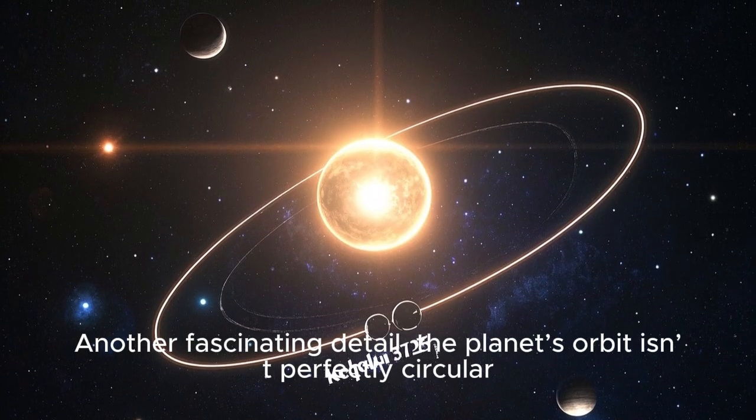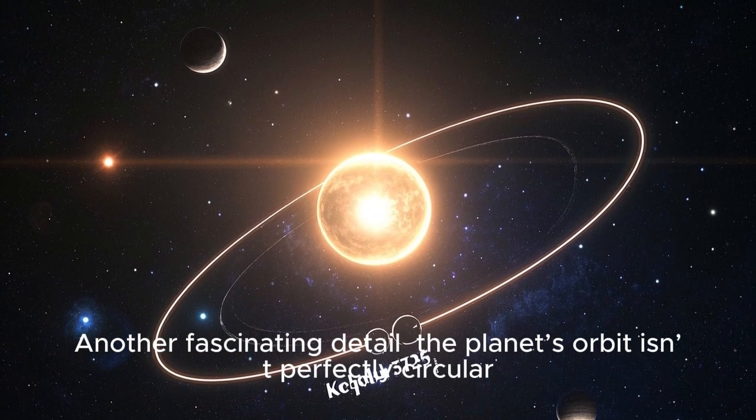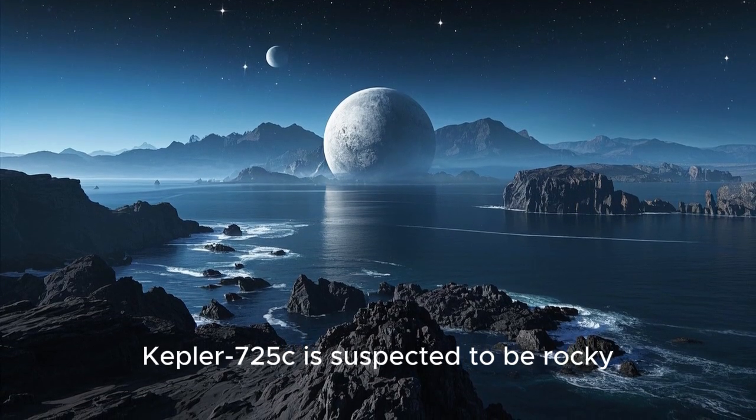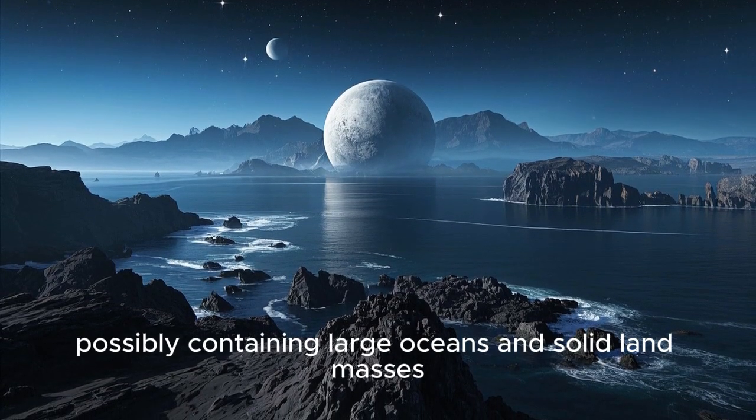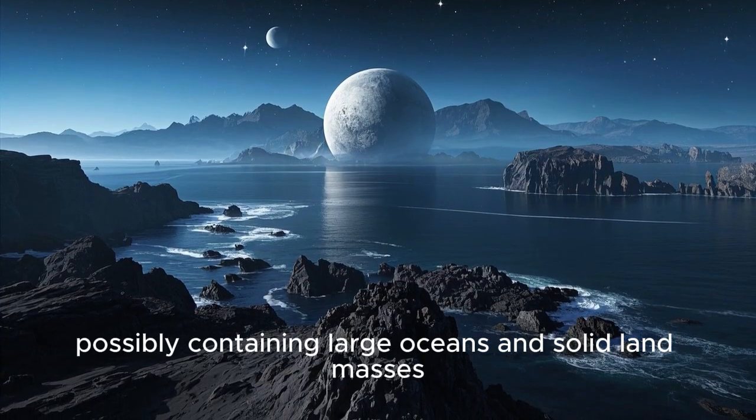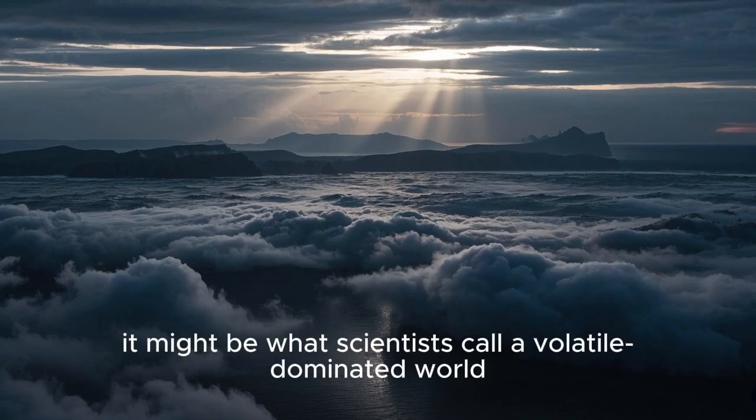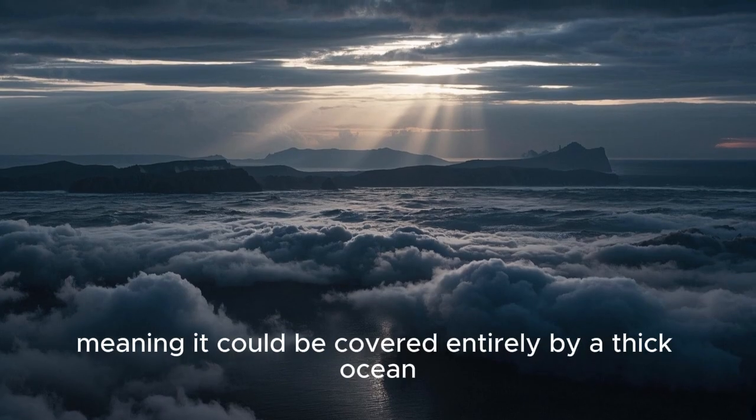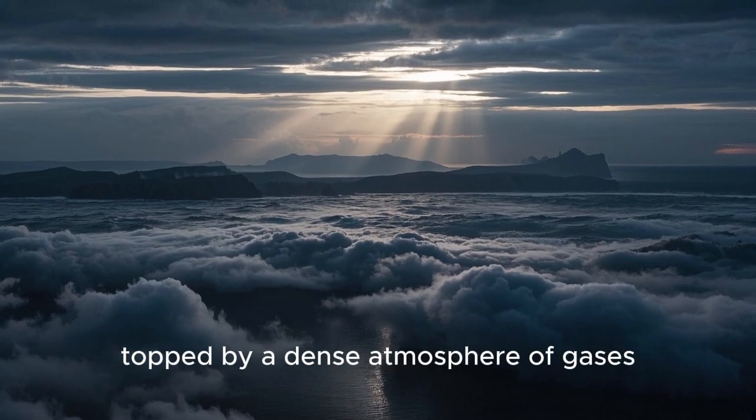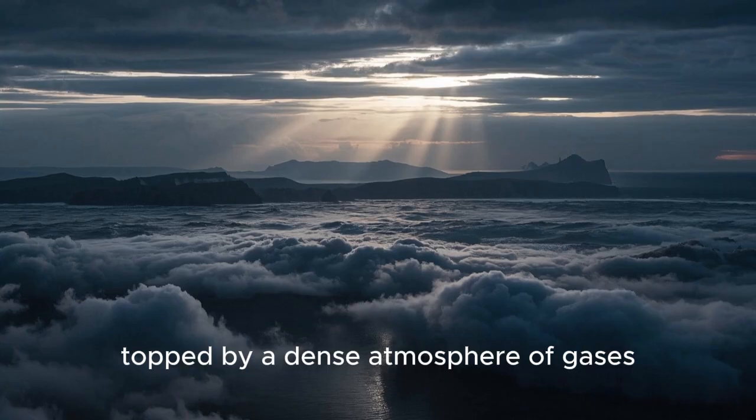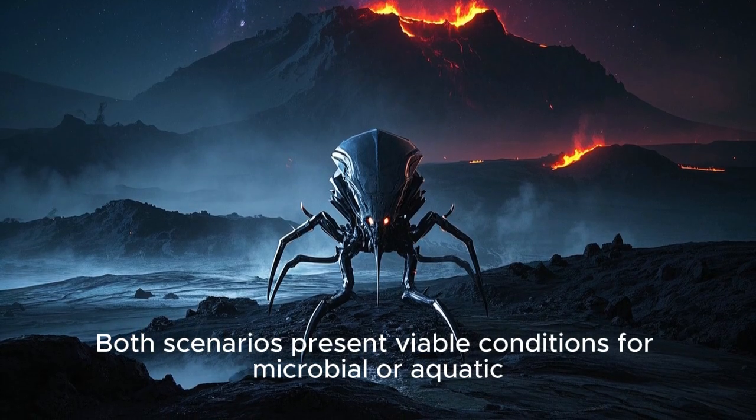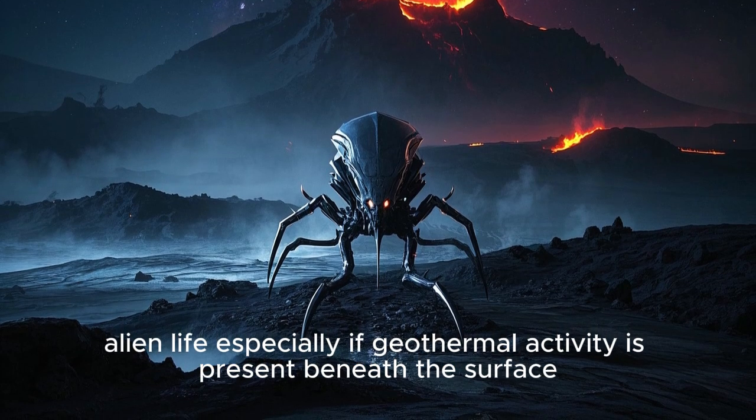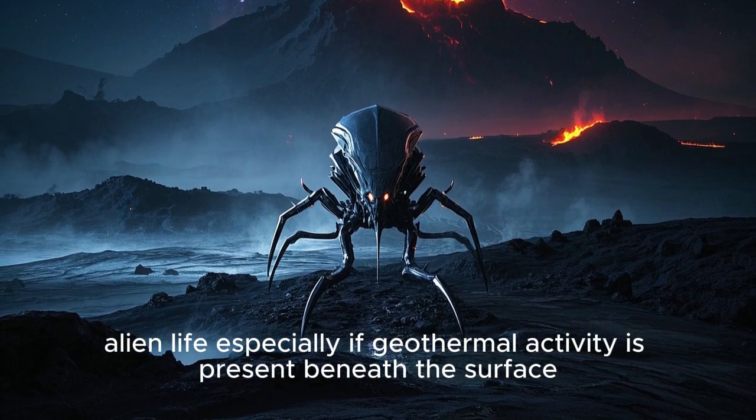Another fascinating detail: the planet's orbit isn't perfectly circular. What's more, Kepler-725c is suspected to be rocky, possibly containing large oceans and solid land masses. Alternatively, it might be what scientists call a volatile-dominated world, meaning it could be covered entirely by a thick ocean topped by a dense atmosphere of gases. Both scenarios present viable conditions for microbial or aquatic alien life, especially if geothermal activity is present beneath the surface.